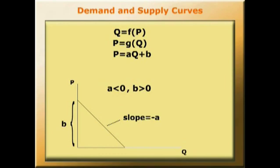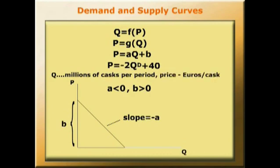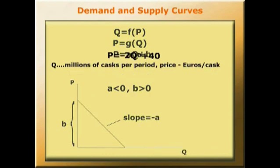So a reasonable estimate of the parameters might be something like P equals minus 2QD plus 40, where Q equals some quantity per period of time in millions of casks, and the price is in euros per cask.